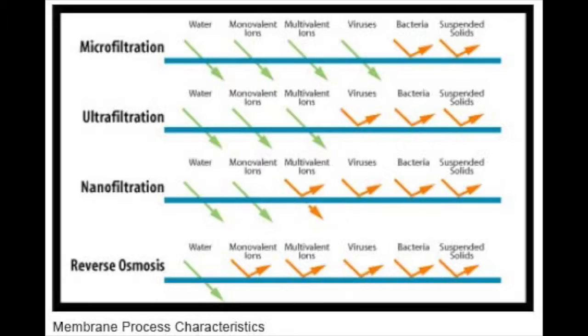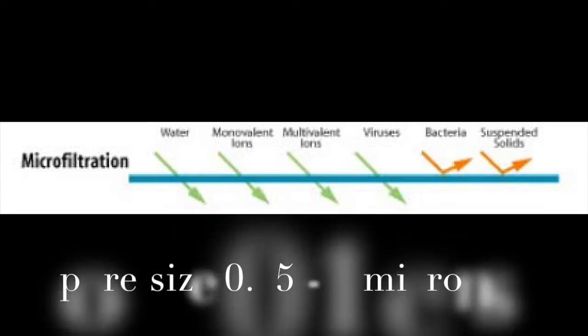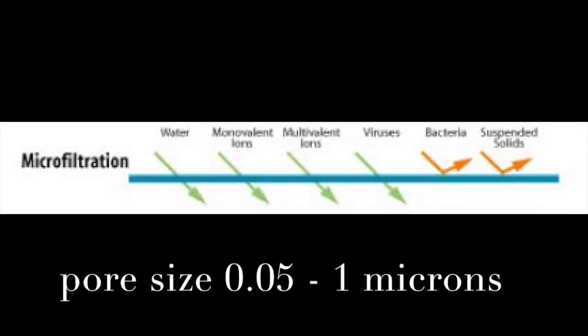There are many different types of membrane filters. These range from microfiltration, which is 0.05 to 1 micron, which is 1 millionth of a meter. This removes materials such as algae, Giardia, Cryptosporidium, and clays.